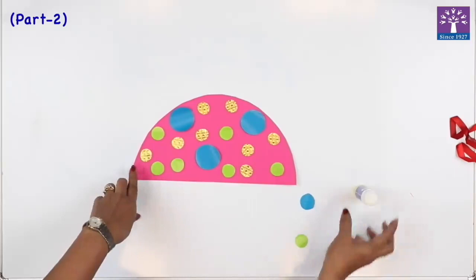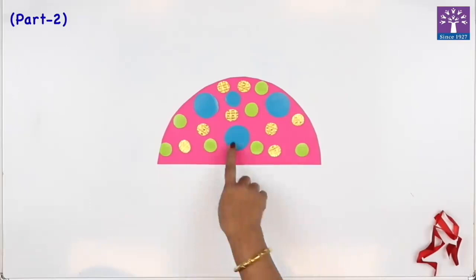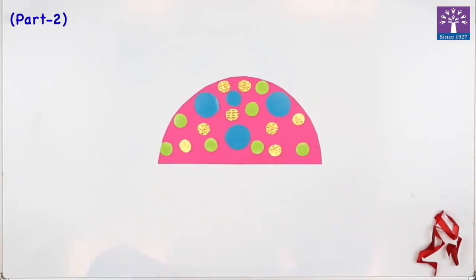All I have to do is pick up one circle and glue them back in place. I finished gluing all the cutouts on the half circle. If you want, you can use some crayons to draw some more designs.